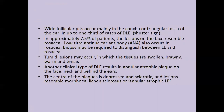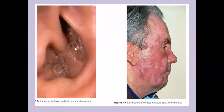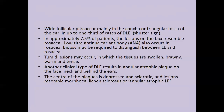Wide follicular pits occur mainly in the concha or triangular fossa of the ear in one-third of cases — a very useful sign called the Schuster sign. In approximately 7.5% of patients, lesions on the face resemble rosacea, which can be confusing, and biopsy is required to distinguish LE from rosacea. In rosacea there is no interface change and no periadnexal infiltrate, though there may be a perifollicular infiltrate — but no infiltrate around the sweat coils as seen in DLE.